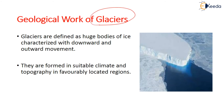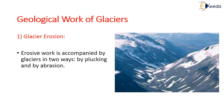Now let us see the geological work done by glaciers. A glacier is a very large or huge body of ice characterized by downward and outward movement. Glaciers are generally formed in suitable cold climates or favorable topographies and are not found on all continents — certain suitable climate conditions are needed for glacier formation.